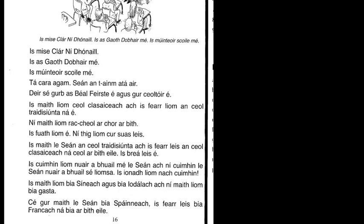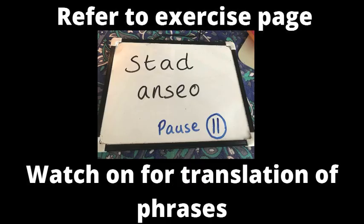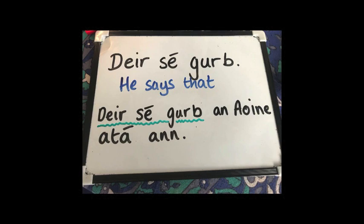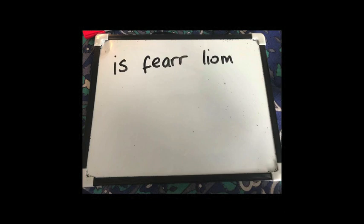Okay, so you can go back at any point to the earlier stages to have a look at the questions and the page of answers. Don't forget the answers are given to you in order, so if you're stuck and you need a hand you can check those answers. But please ask me questions in the WhatsApp if you need me to clarify anything. Pause and go back if you want to listen to pronunciation. Now we're going to go through some phrases that might help you. 'Deir sé go raibh' means 'he says that', and you saw that in the text. 'Deir sé go raibh' — 'deir sé go raibh an Aoine ann' — he says that it's Friday.